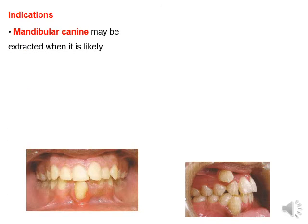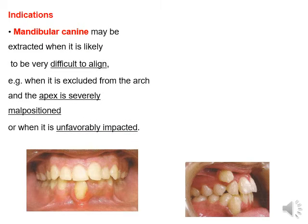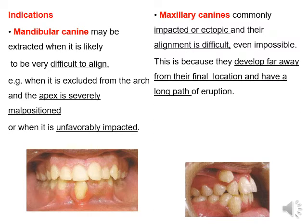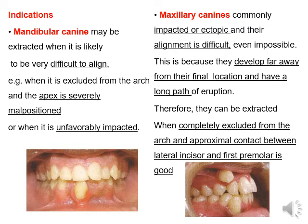The indications for canine extraction: the mandibular canine may be extracted when it is likely to be very difficult to align — as when it is excluded from the arch and the apex is severely malpositioned, or when it is unfavorably impacted. For the upper canines, they are commonly impacted or ectopic and their alignment is difficult or even impossible, as they develop far away from the final location and have a long path of eruption. Therefore, they can be extracted when completely excluded from the arch and the proximal contact between the lateral incisor and the first premolar is good.